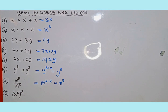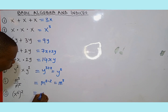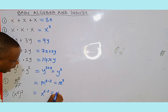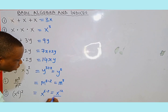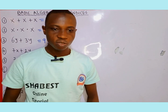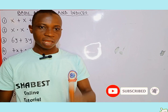The last one is the power law of indices: x as a base raised to the power of 6, and all of that raised to the power of 2. According to the power law of indices, we multiply the two powers together: 6 multiplied by 2 gives us x to the power of 12. Those are the basic algebra and indices examples I have for you today. Thanks for watching, and please don't forget to subscribe to my YouTube channel and follow me on Facebook, TikTok, and Instagram at Shabez Online Tutorial. Bye!